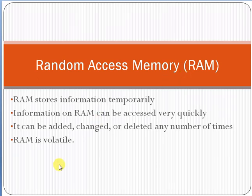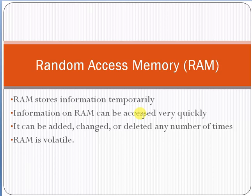Whenever your computer is working, it is storing the work in the RAM. RAM is volatile, and the advantage is that it can be accessed very easily by the computer. It stores information temporarily, and that's why it's called Random Access Memory, or RAM.